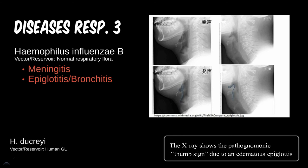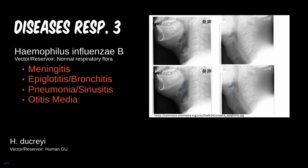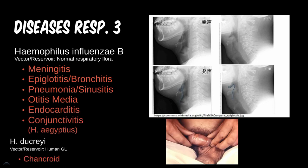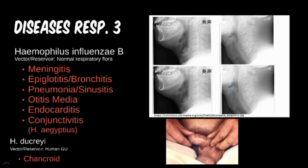This throat swelling can be so severe that it blocks the airway and can be lethal. The other Haemophilus species of note is not a respiratory pathogen, but a genital one. H. ducreyi causes genital lesions called chancroids. These can visibly resemble the chancre seen in syphilis, with one major difference — these lesions are quite painful.